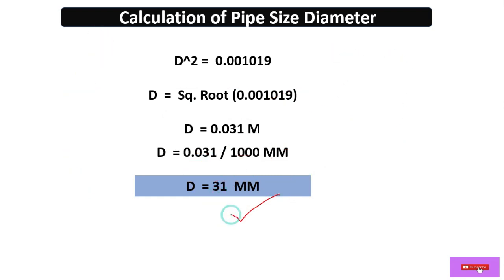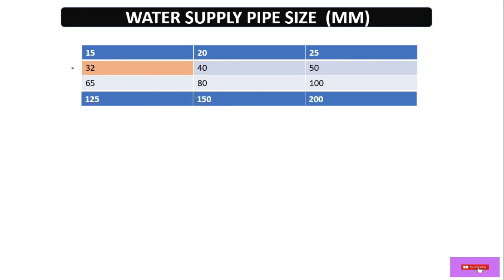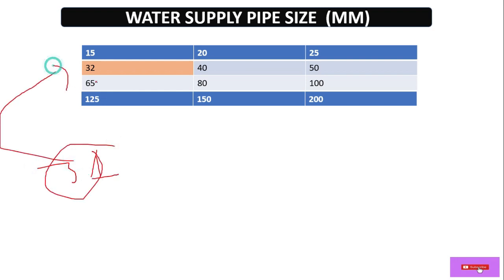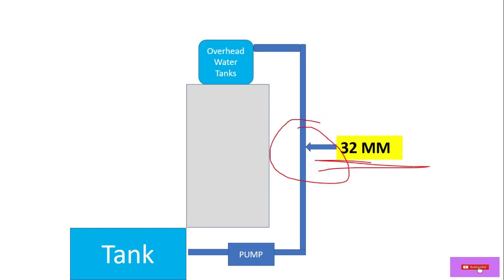The calculated size may not be available in the market, so we select from available standard sizes. Looking at the table of available pipe sizes — 15, 20, 25, 32, 40, 50, 65, 80, 100, 125, 150, 200 mm — our calculated value is 31 mm, which is nearest to 32 mm. Always go for a size higher than the calculated value, so our final pipe size is 32 mm.